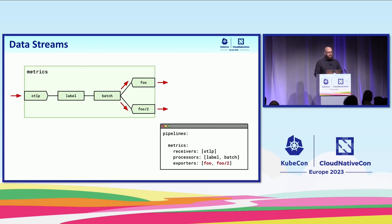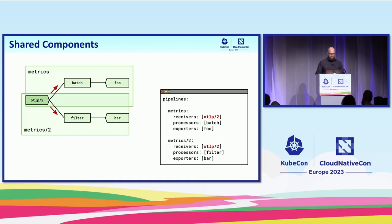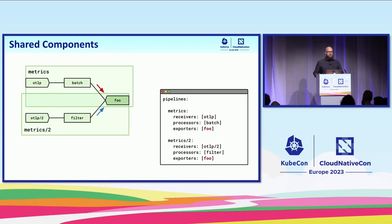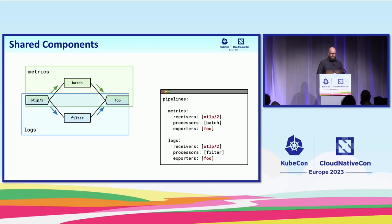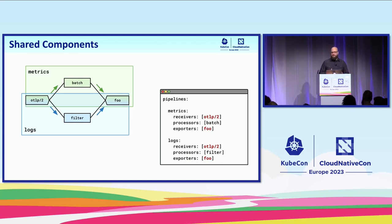The collector can do some of this already, but the problem is that it's slightly constrained by the pipeline's assumptions. There are a couple other ways though — we can share components. When we share a receiver, the data it emits will be replicated so that each pipeline will have its own data stream. And when we share an exporter, this will merge the data streams before going into the exporter. It's also possible to share components between pipelines of different data types. For example, the OTLP receiver: if you send metrics to it, it will route them onto the metrics pipeline, and if you send logs, it routes them onto the logs pipeline.